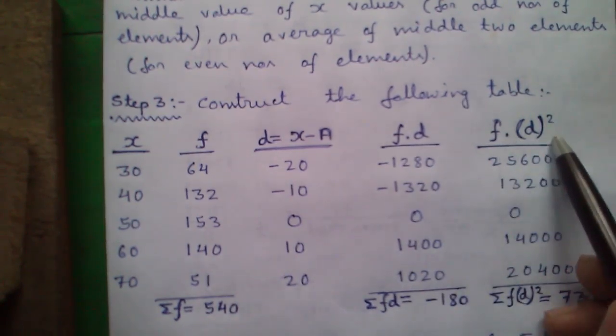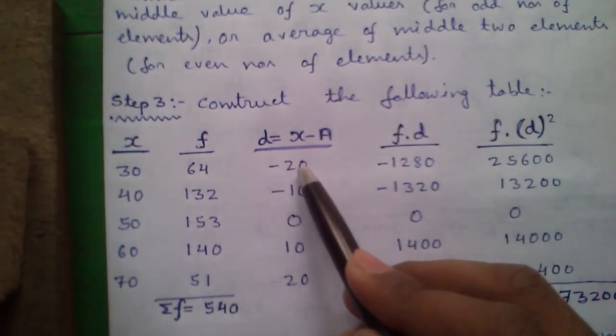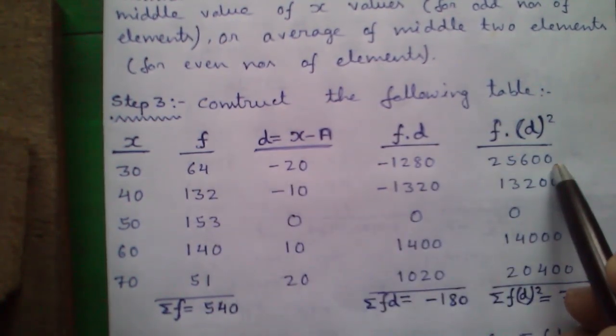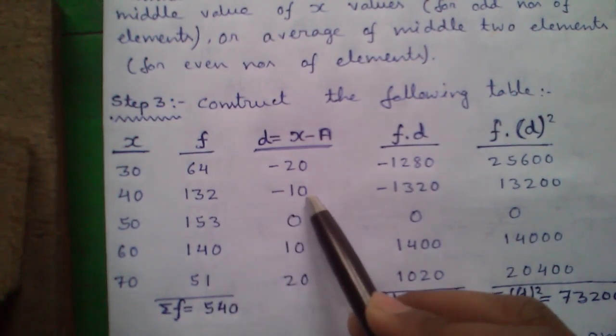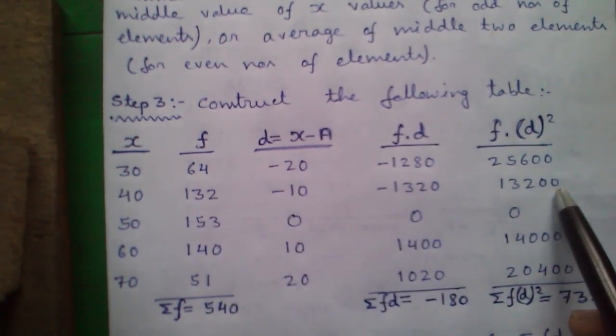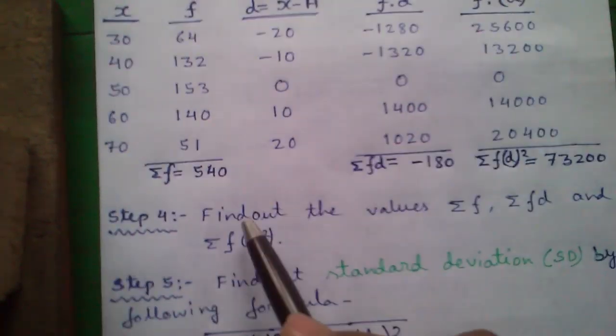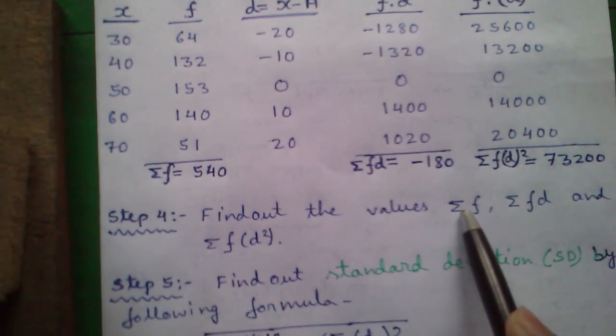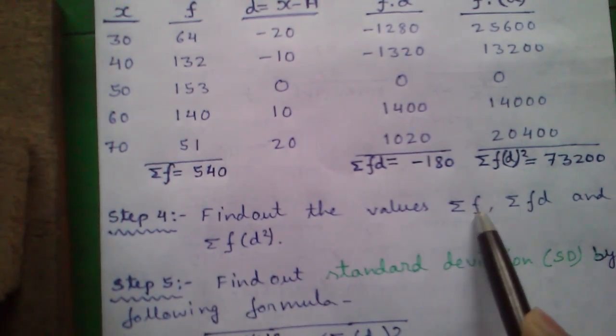Next, F into D squared is 400. 64 into 400 is 25,600. Next, D squared is 100. 132 into 100 is 13,200 and so on. Next, step 4. Find out the values sum of F. This symbol is summation symbol. Sum of F, sum of FD and sum of F into D squared.